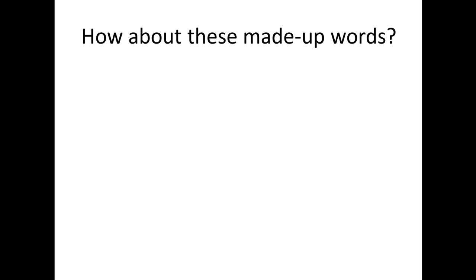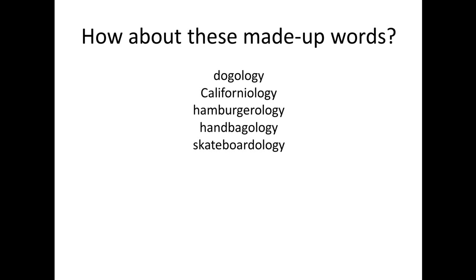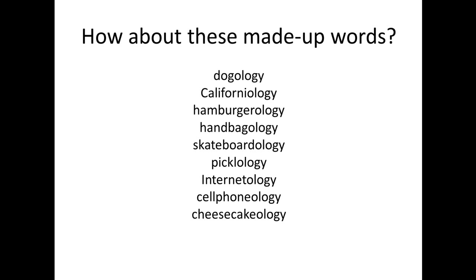How about some made-up words? Try this: what would dogology be? That's right — the study of dogs. Californiaology — the study of California. Hamburgerology — the study of hamburgers. Handbaology — the study of handbags. Skateboardology — the study of skateboards. Pickleology — the study of pickles. Internetology — the study of the internet. Cell-phoneology — the study of cell phones. Cheesecakeology — the study of cheesecake. And finally, basketballology — the study of the American sport, basketball. I made these words up, but you see how you could figure each of them out.